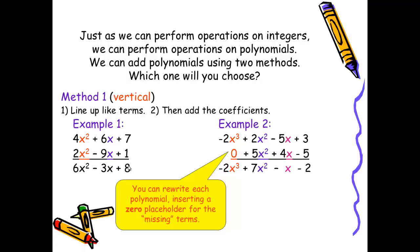You probably don't have room for example 2 on your notes, but take a look at this unique situation. Our first polynomial is of the third degree. It has a 2x³ term. But our second polynomial does not. So it's okay to write in a zero as a placeholder when there are missing terms. This can help you to keep things lined up.